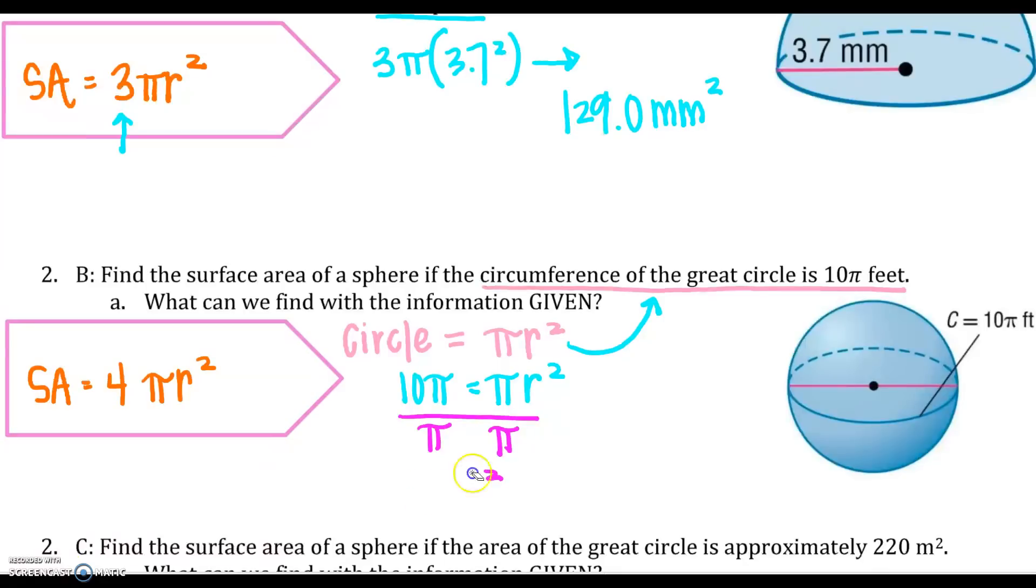And if you noticed, I have made an error because that says circumference. So I need to back up and tell myself that the circumference formula is 2πr. Goodness, what am I doing? All right, so my circumference, let's start over, is 10π equals 2πr. Solving for my radius because that's what I need in here. I'm going to divide both sides by 2π. My π's cancel. So 10 divided by 2, so that would be 5 equals my radius.